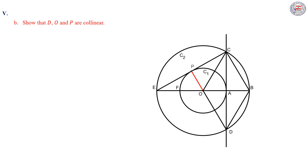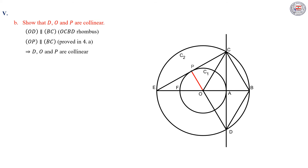In part B, we have to show that D, O, and P are collinear. We have OD parallel to BC since OCBD is a rhombus. And we have OP parallel to BC, proved in part 4A. So we have two lines that are parallel to the same line BC and they have a common point O. Then we can deduce that D, O, and P are collinear.